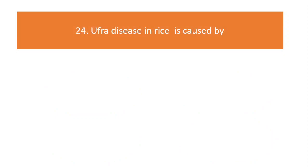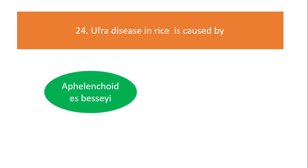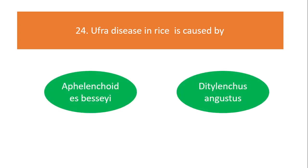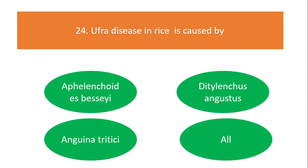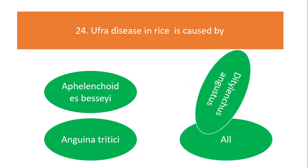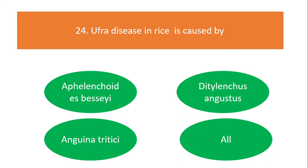Ufra disease in rice is caused by: Epilinchodus besi, Ditylenchus angustus, Anguina tritici, or all of the above? The answer is Ditylenchus angustus.